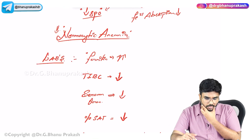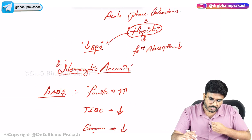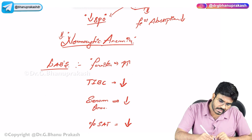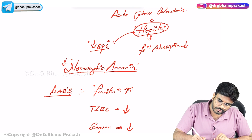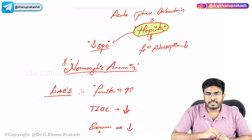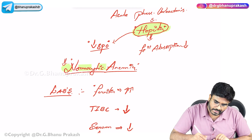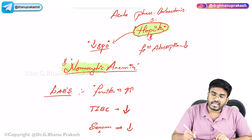In summary, anemia of chronic disease is due to the acute phase reactant hepcidin, and it is best classified as a normocytic anemia — not microcytic.